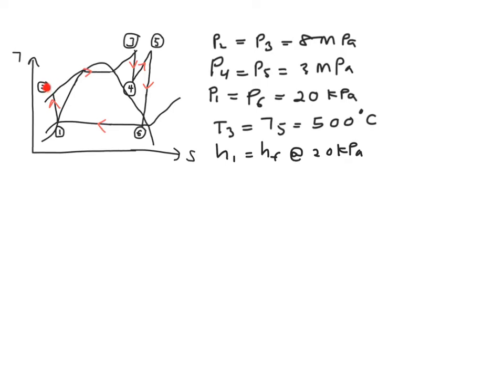Next is state 2. You only know your pressure in state 2, so you cannot read directly everything that you need from your property table. So next, let's move to your state 3 where you are given your pressure as well as your temperature over here.